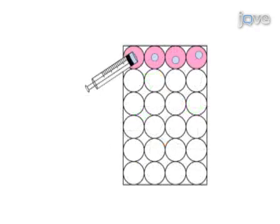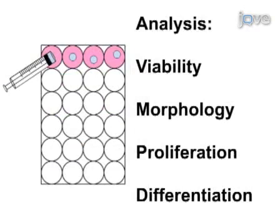Downstream analysis for cell behavior may include tests for viability, morphology, proliferation, and differentiation.